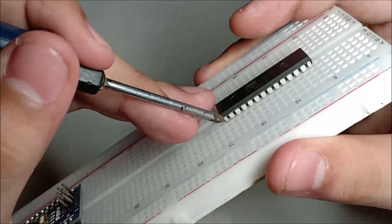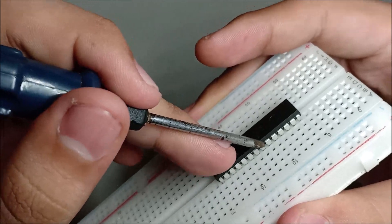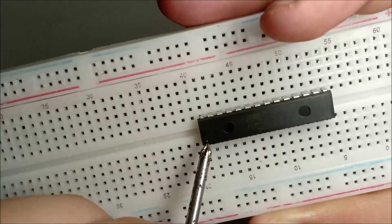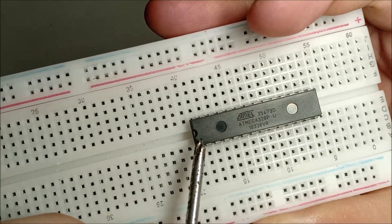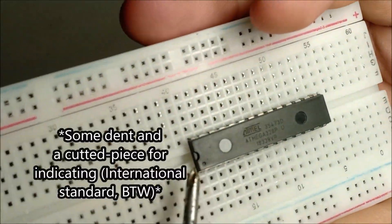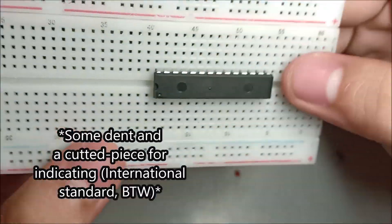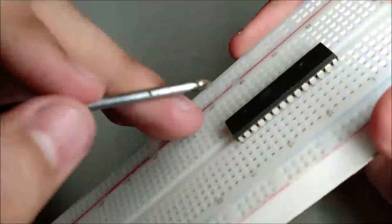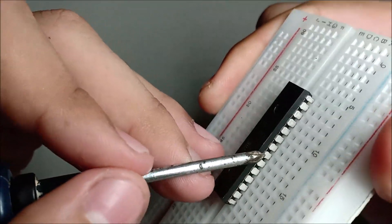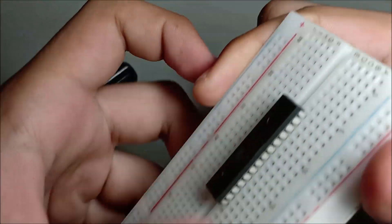There's two parts of it. There's an indicator to show orientation. Make sure the label is in the right orientation. Also there's a dent there, a little chunk that they cut off, to tell you where is the first pin and where is the 28th pin.